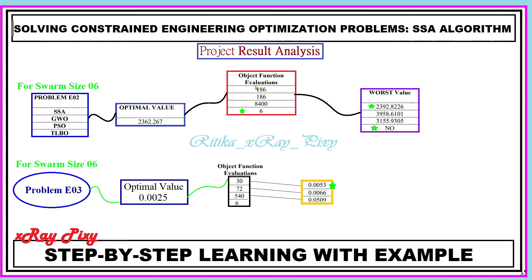For swarm size 6, problem 2, we got the optimal value shown here, and you can see the number of evaluations made and the worst value for each algorithm.